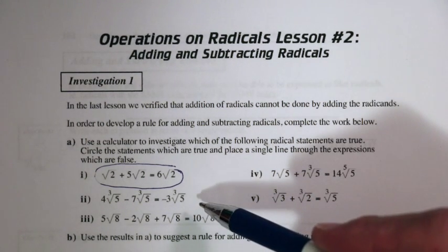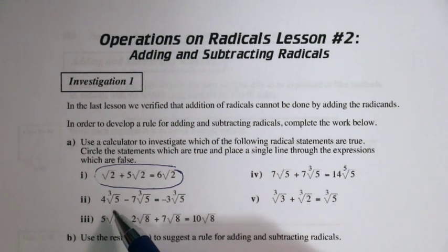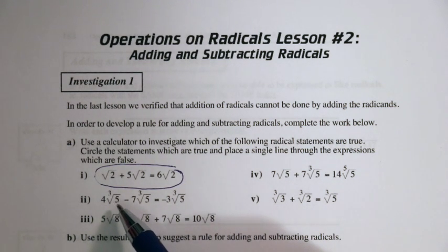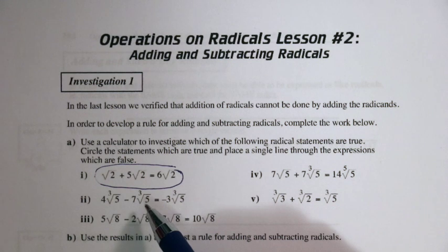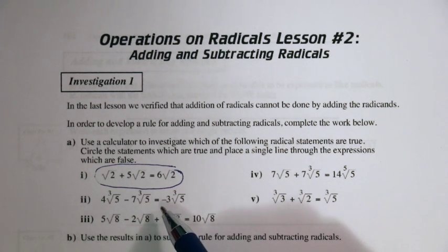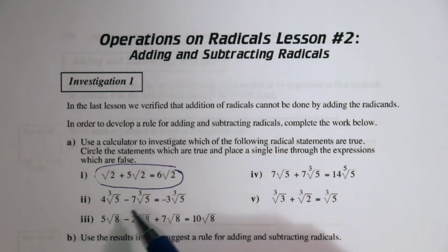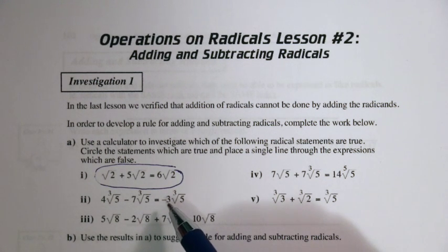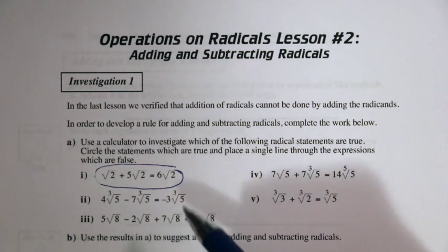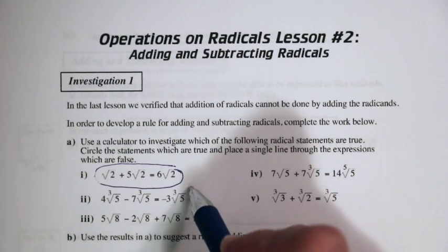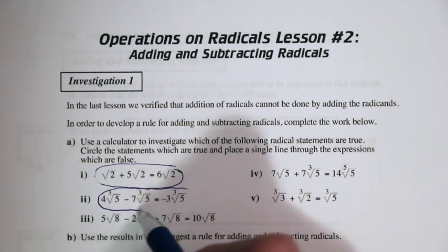Let's take a look at number two. Here we have four cube root of five minus seven cube root of five. This is also true — four take away seven is negative three cube root of five. So that's also true; we'll circle that as well.